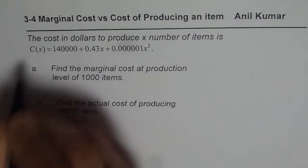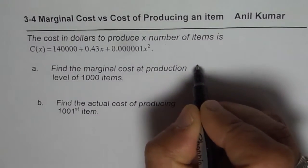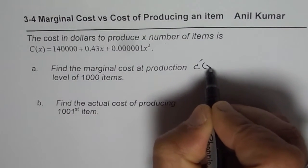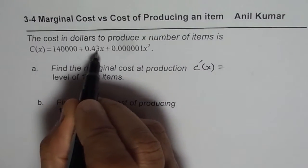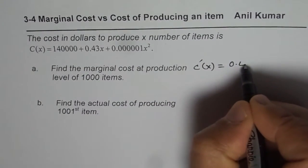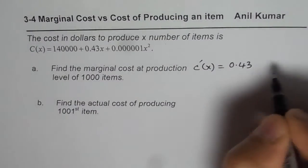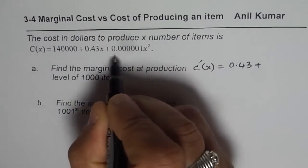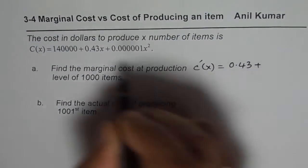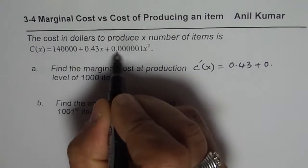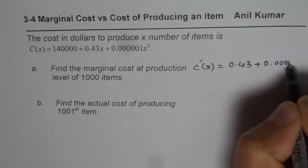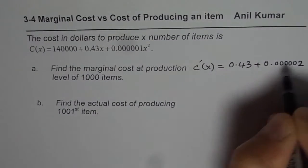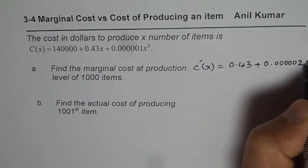So let us find the derivative of this function which is C prime X equals to, for constant it is 0, for 0.43X it is 0.43, and for the quadratic function it will be 2 times all this. So this will be 0.000001, 2, times X.